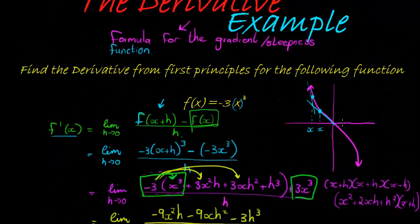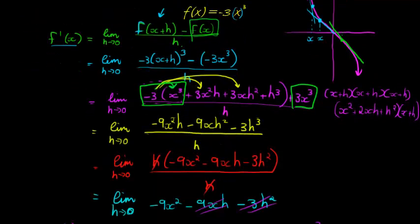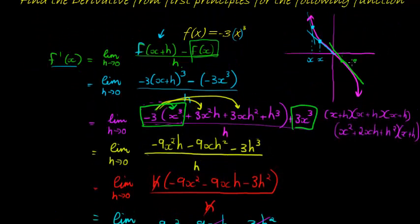So when x is equal to 1, that's somewhere there, this gradient is negative. You can see it's going downhill, so it's negative 9. That is the steepness of this line if someone was to walk on it.